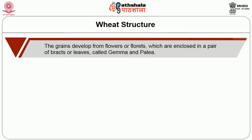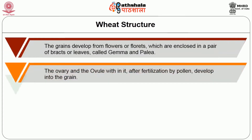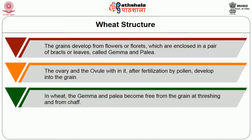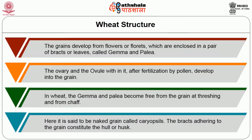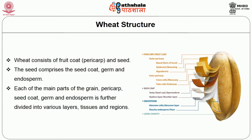The grains develop from flowers or florets which are enclosed in a pair of bracts or leaves called lemma and palea. The ovary and the ovule within it, after fertilization by pollen grains, develop into the grain. In wheat, the lemma and palea become free from the grain at threshing and form the chaff. This is said to be a naked grain called caryopsis. The bracts adhering to the grain constitute the hull or husk.